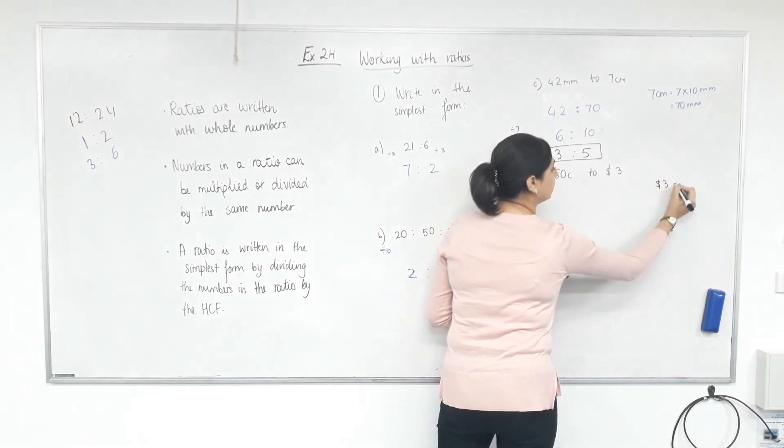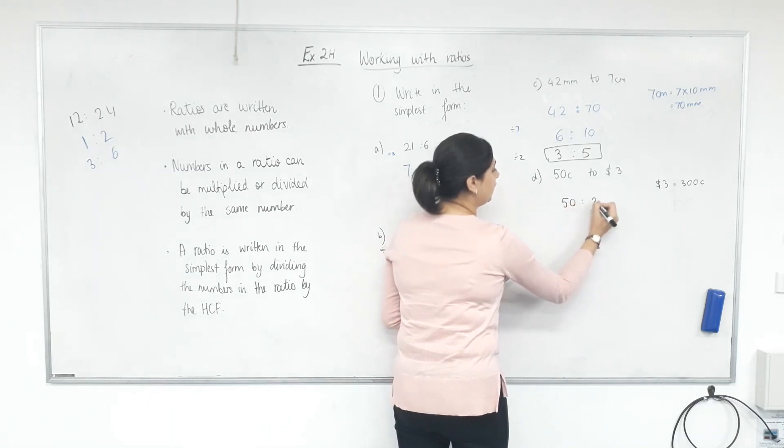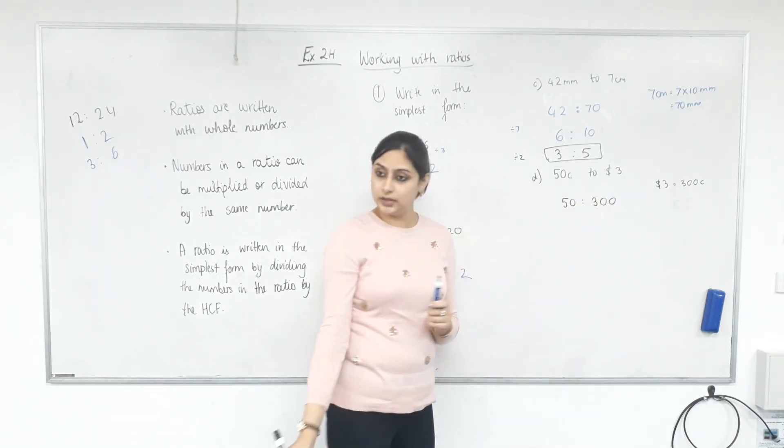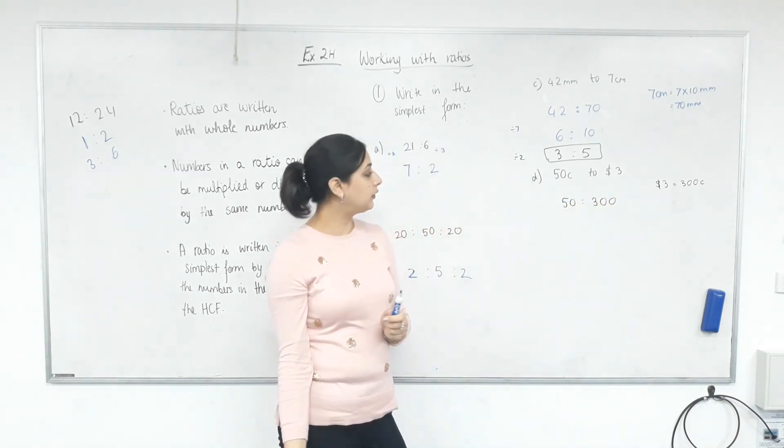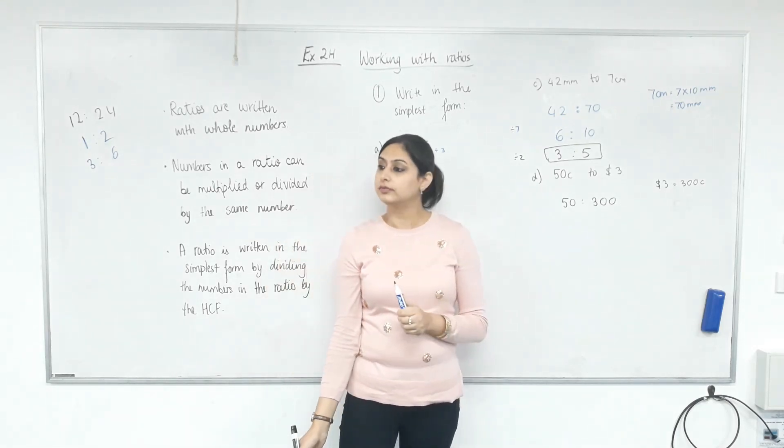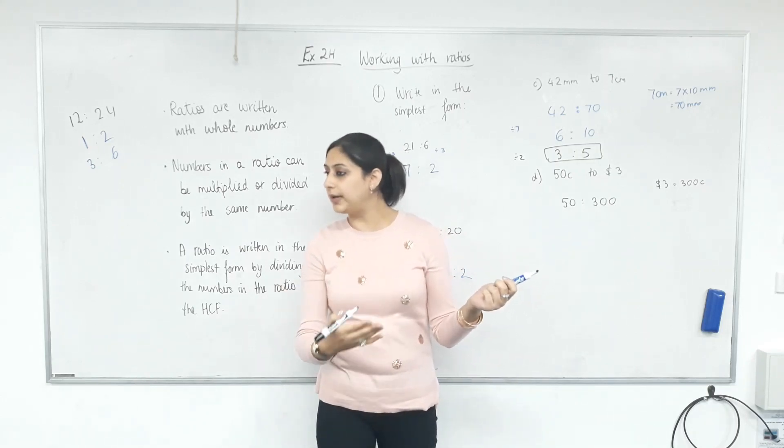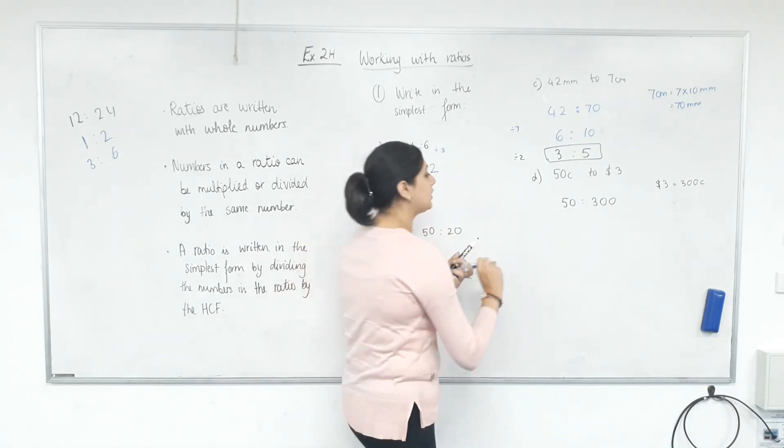300. 300. 50. If you find 50 to be a bit bigger, we can do it in steps. Can we divide by 10 first? Yeah. Yeah. Let's do it in steps.